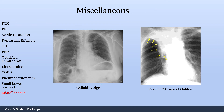Just some miscellaneous signs — here is the Chilaiditi sign. This is when a loop of bowel actually transposes over the liver. It can cause some pain, but generally it's asymptomatic. It's pretty rare, but you may see this. It's one of the reasons why if you're getting a liver biopsy, it's good to have image guidance so you know there's no bowel overlying the liver, and you're not going to perforate it by taking a biopsy through a piece of bowel.